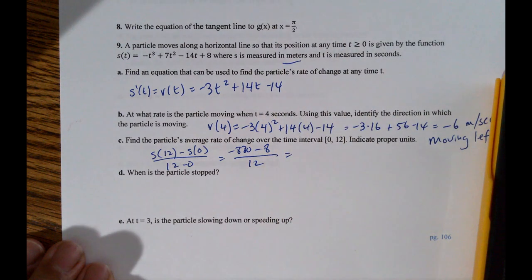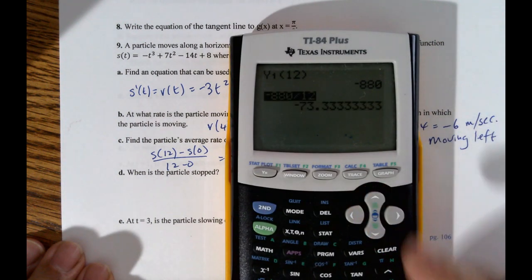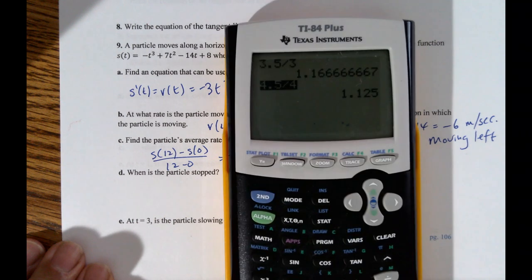So that means it's negative 880 divided by 12. And we have, not 880, 880. My bad. Negative 880 divided by 12.